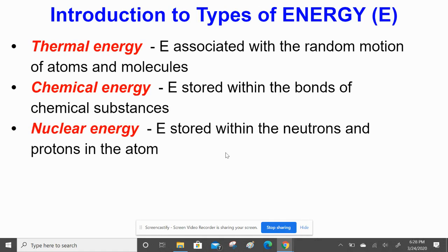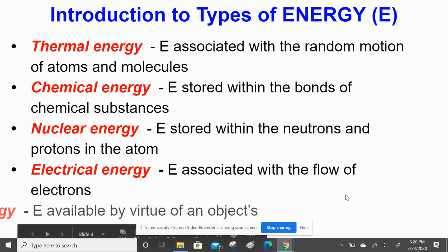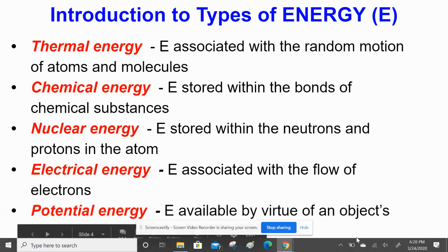Nuclear energy is energy stored in neutrons and protons, and we talked a little about that when we did radiation. Electrical energy is the flow of electrons, like electricity. And potential energy is stored up energy that's available.